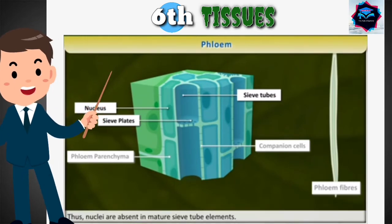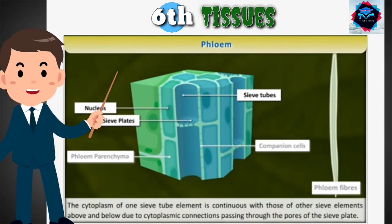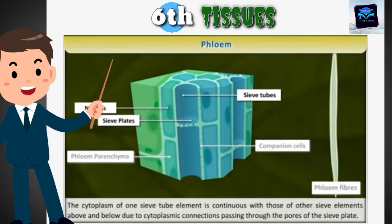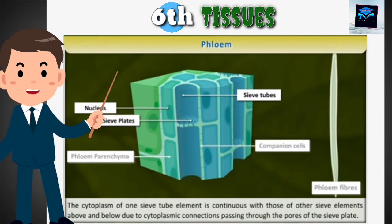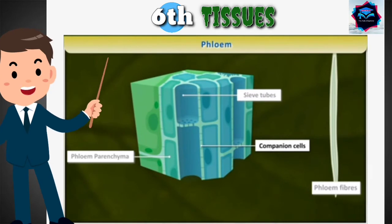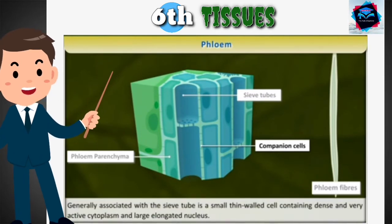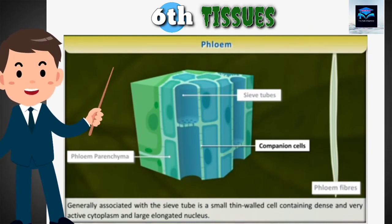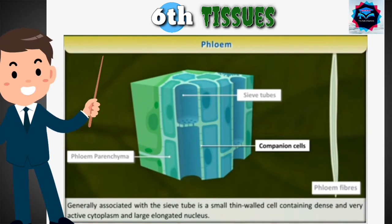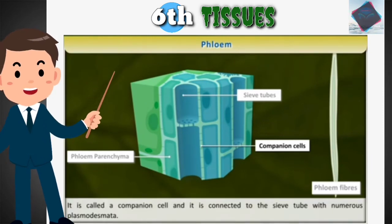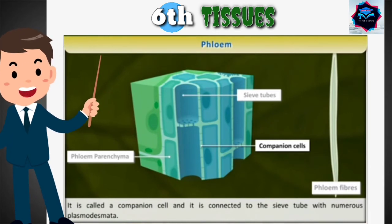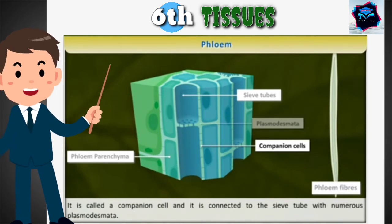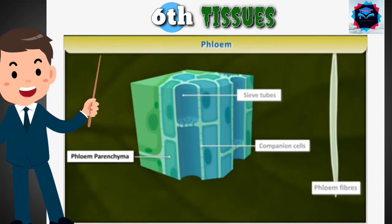The cytoplasm of one sieve tube element is continuous with those of other sieve elements above and below, due to cytoplasmic connections passing through the pores of the sieve plate. Companion cells are generally associated with the sieve tube — small, thin-walled cells containing dense and very active cytoplasm and a large elongated nucleus. Each companion cell is connected to the sieve tube by numerous plasmodesmata.